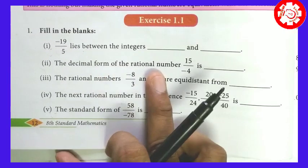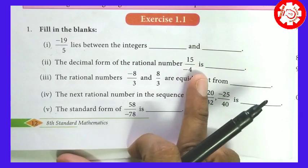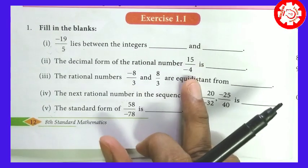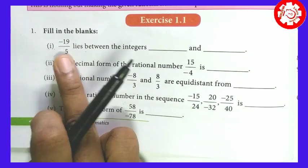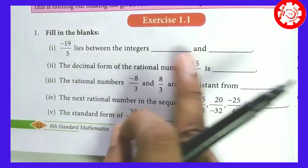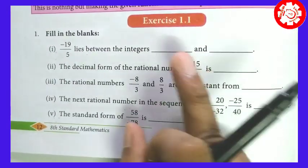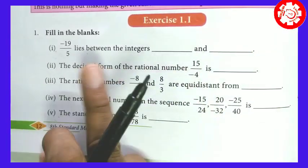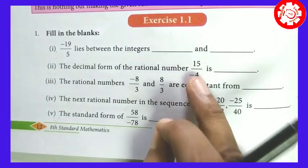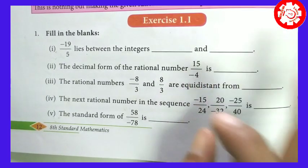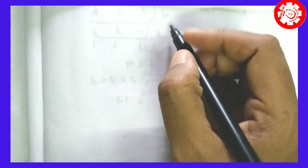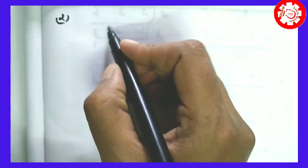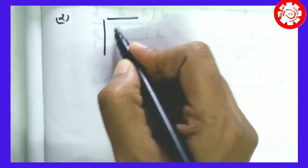2nd sum: the decimal form of the rational number 15 by minus 4 is dash. 15 by minus 4 in decimal form — this is the first time we will do this model. We will divide and find the decimal value. It is very simple. So we will divide 15 by 4 to get the decimal number. That is the second sum: 15 by minus 4 equals the decimal form.